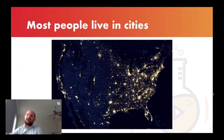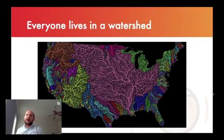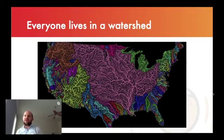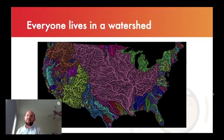Most people live in cities, but everyone lives in a watershed. This next figure shows a map of the United States and the major watersheds throughout the entire country. Basically, this separates where water is moving across the landscape. The big pink area in the center is the entire Mississippi River watershed. All the lines moving through these watersheds that look like veins are streams, creeks, and rivers that are draining our landscape. Everywhere that we live — it's a watershed. No matter who you are or where you're living, you're living in a watershed.